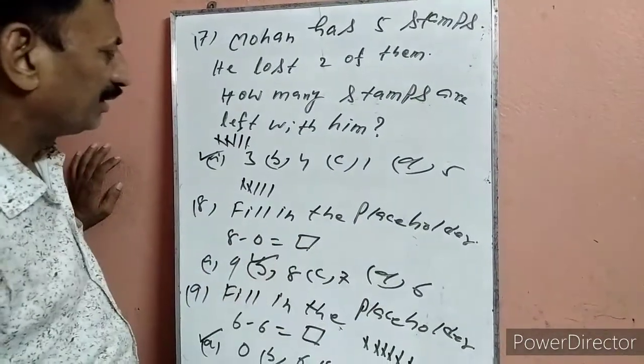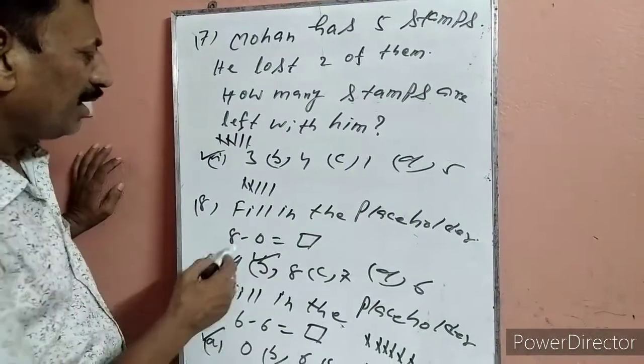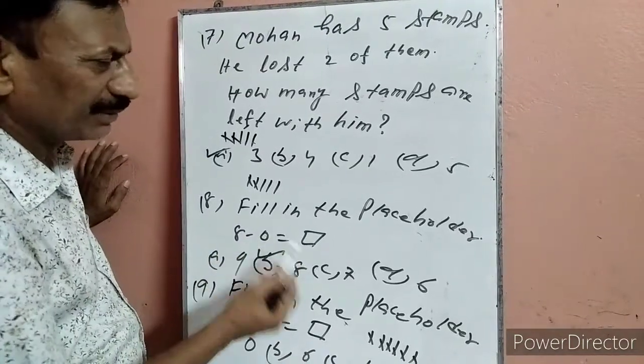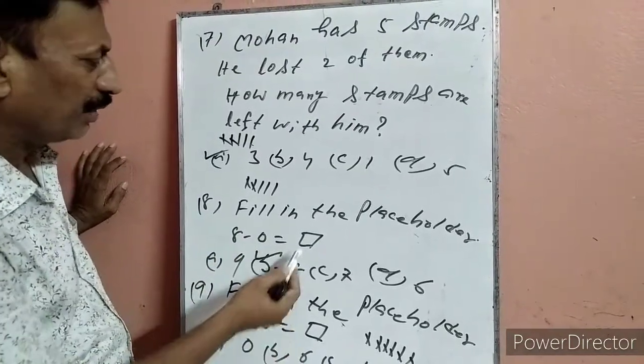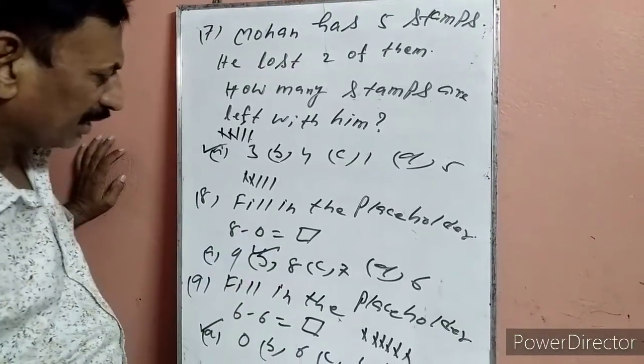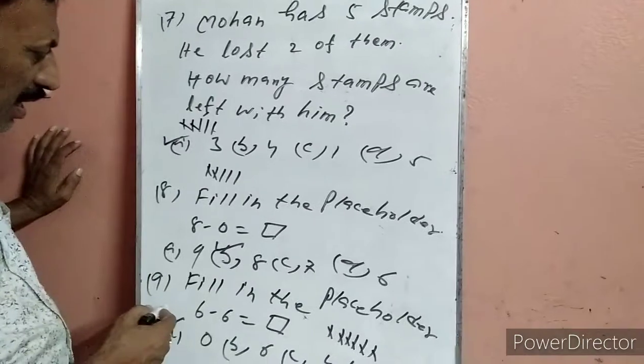Question 8: Fill in the blank — 8 minus 0. इस table में से 0 subtract होगा तो 8 ही होगा. B के option में टिक लगा दिया.